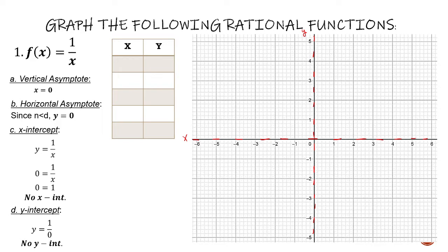If I'm going to get points from the left of the vertical asymptote, I'm going to get negative 4, negative 3, negative 2, negative 1, and negative 0.5. So those are the x values from the left of the vertical asymptote.